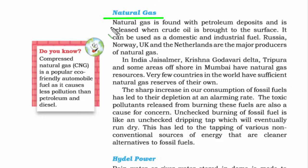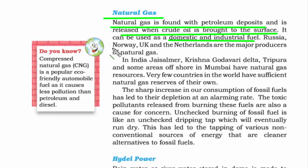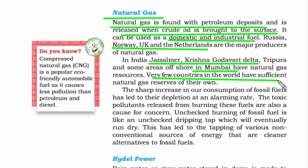Natural gas is found exactly where petroleum is, and requires drilling to bring it to the surface. It is used as domestic and industrial fuel — for vehicles, it is the cleanest form of energy with less carbon emission. Major producers are Russia, Norway, UK, and the Netherlands. In India, natural gas is extracted from Jaisalmer, Krishna Godavari Delta, and Tripura. Very few countries have sufficient reserves; India imports natural gas from Sudan, Syria, Iran, and Nigeria.